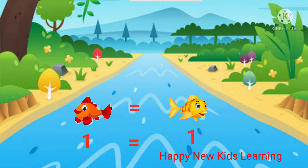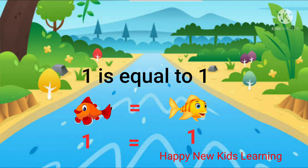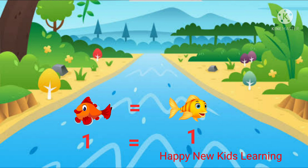Here we have one fish on each side. That means one is equal to one — we have the same number on both sides. So let's put the equal to sign here, because one is equal to one.